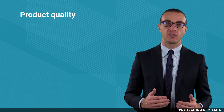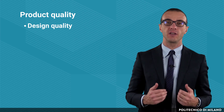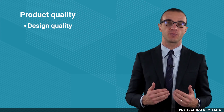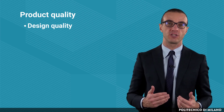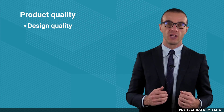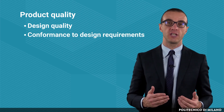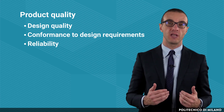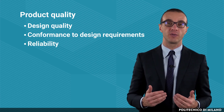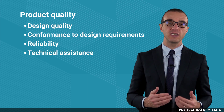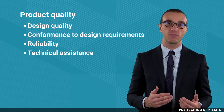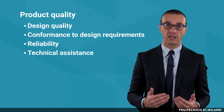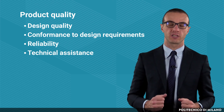Switching now to the external performances, let's consider product quality. There are four dimensions that can be considered: design quality, which expresses if the product design responds to the customer specifications; conformance, which measures if the products respect design requirements; reliability, which is the ability of the product to keep its performances over time; and technical assistance, which is the ability of the system to ensure an effective technical support service for products.